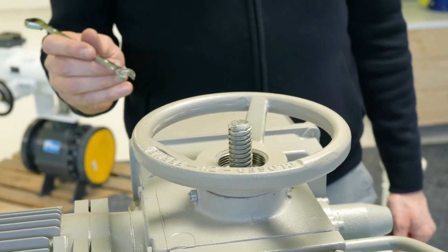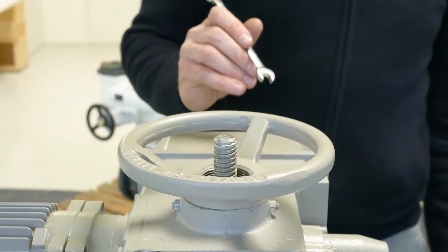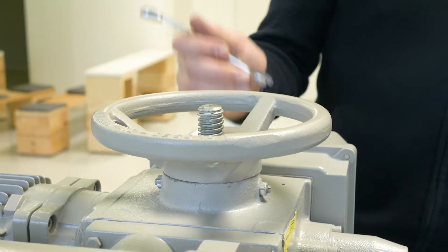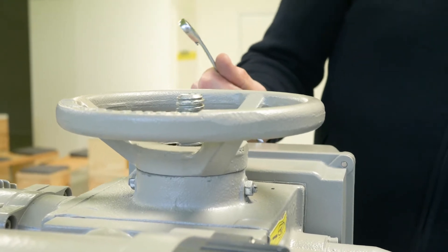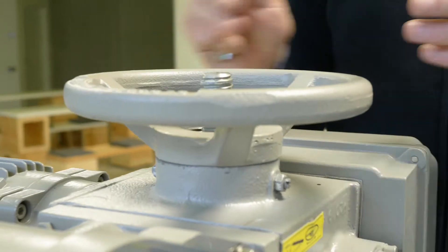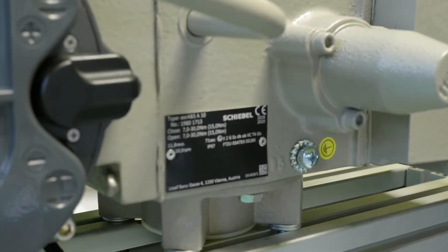Okay, today I want to show you how you can change the hand wheel of an AB series actuator. We have here actuator type AB3 in explosion proof design and we want to change this small hand wheel.